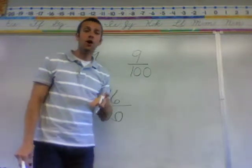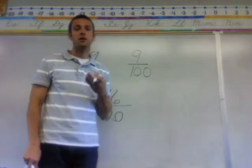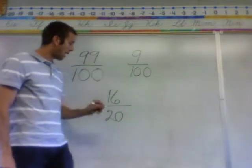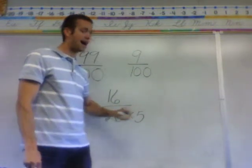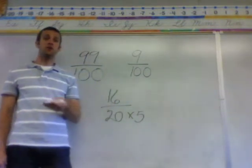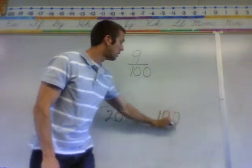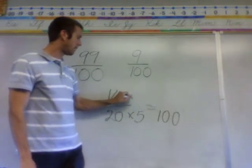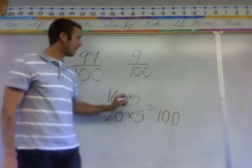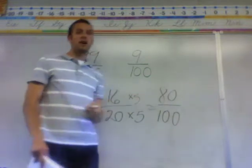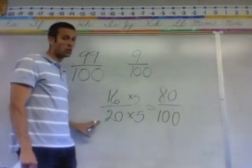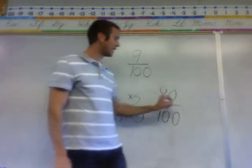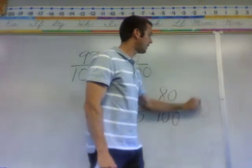However, you know that you can manipulate a fraction, and you can make equivalent fractions by doing something to both the top and the bottom. How about multiplying 20 by 5? Won't that get you 100? And whatever you do to the bottom, you have to do to the top. 16 times 5 is 80. So I just made an equivalent fraction: 16 twentieths is the same as 80 hundredths.